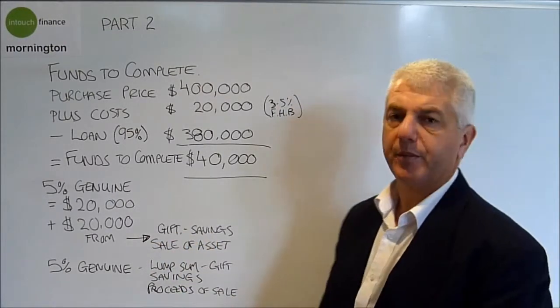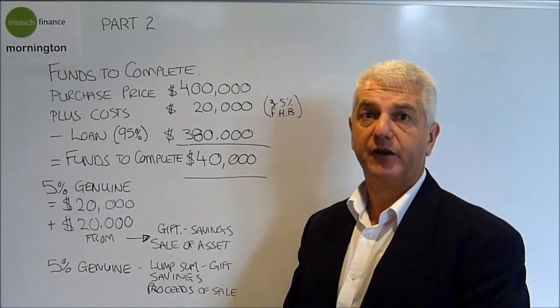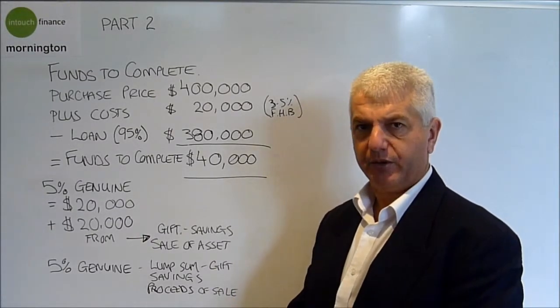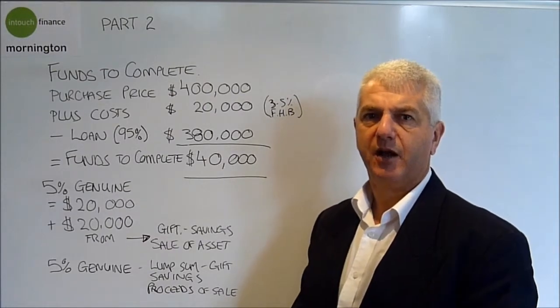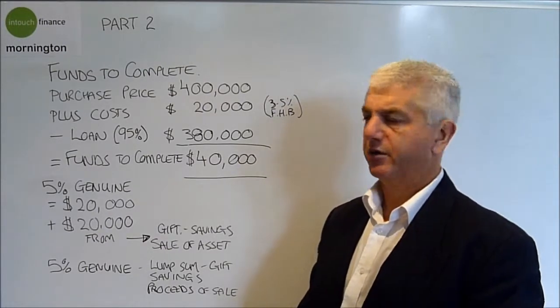Or it could be from the proceeds of the sale of another property. So you've previously owned a house, sold it, and you've got the cash in the bank still. We can show where that cash came from. That's also considered genuine savings.